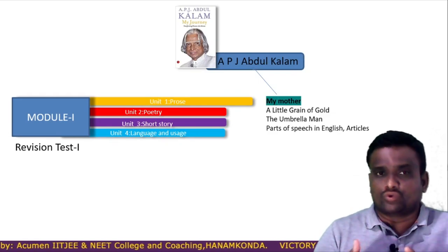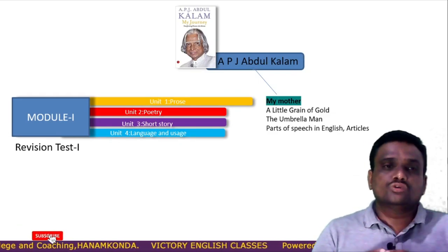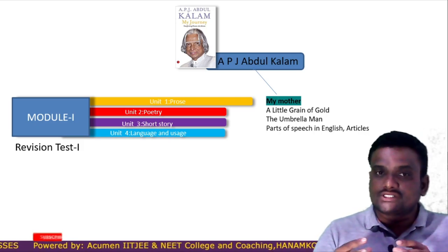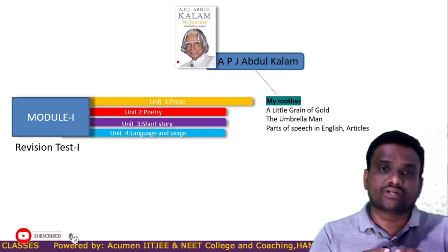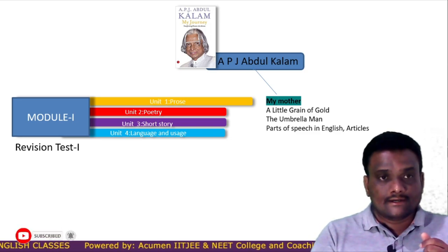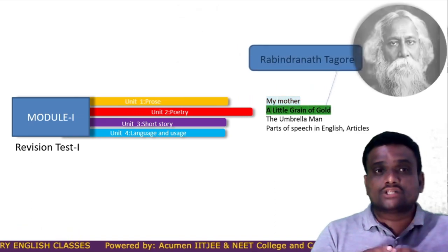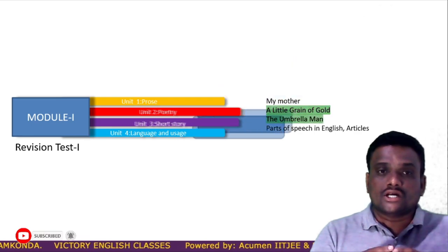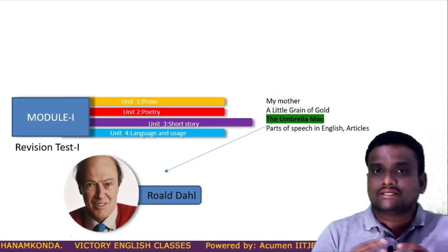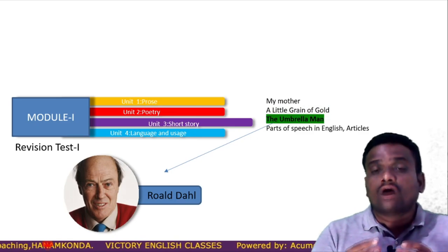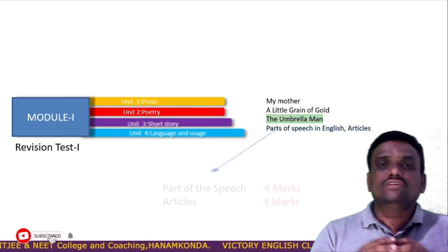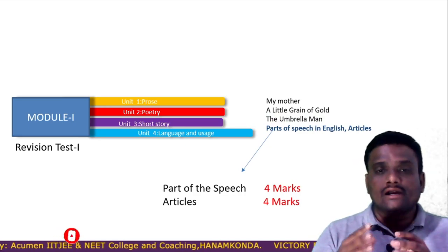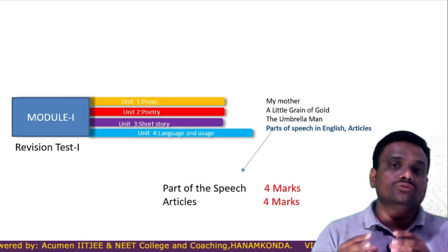Module one itself has four units: prose, poetry, short story, and language. The prose of module one is 'My Mother', a text taken from the book 'My Journey' written by our former president of India, APJ Abdul Kalam. The poetry is 'A Little Grain of Gold' by Rabindranath Tagore. The short story is 'The Umbrella Man' by Roald Dahl. Language and usage covers parts of speech in English and articles. Eight marks are compulsory through these topics.